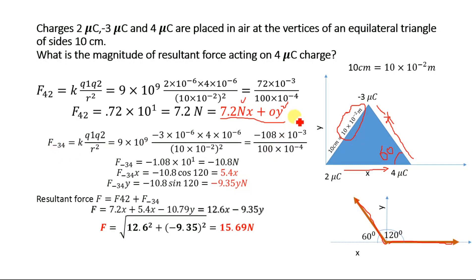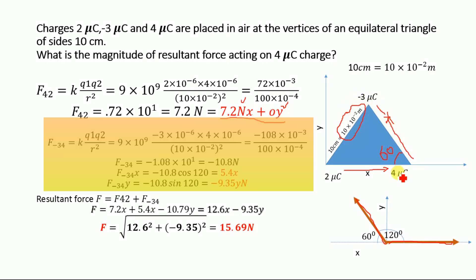Now let's determine the force of attraction between the minus 3 µC and the 4 µC charge. Again using F = K·Q₁·Q₂ / R², where K = 9 × 10⁹, Q₁ = −3 × 10⁻⁶ C (since micro equals 10⁻⁶), Q₂ = 4 × 10⁻⁶ C, and R = 10 × 10⁻² m. Solving this, we get F₋₃,₄ = −10.8 N.